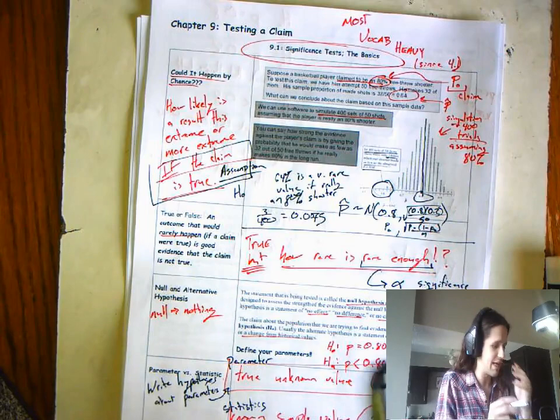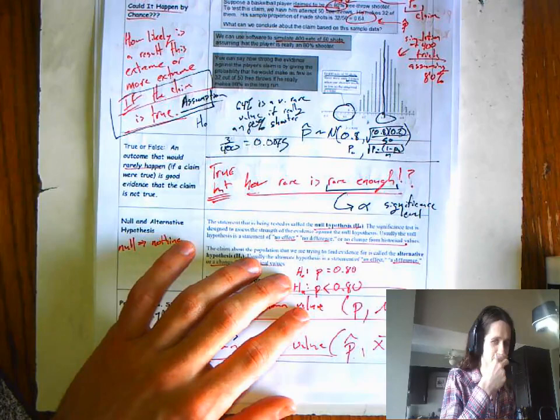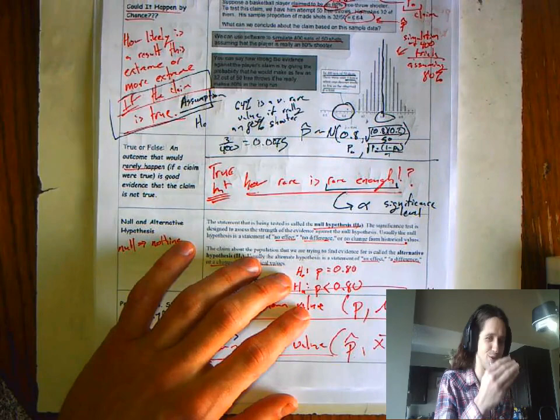We're going to assume the null hypothesis is true and we're going to say, how likely would this result be if it was true? So we had Silas, the prolific free throw shooter, claim to be an 80% free throw shooter. I had my doubts.